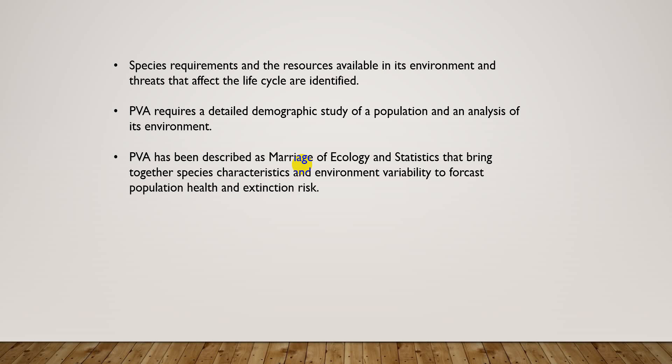At the first step, demography is important — population counting and ratio of male to female. If there is a large number of males in a forest and only one female, then there is a high chance of extinction. PVA has been described as a marriage of ecology and statistics that brings together species characteristics and environmental variability to forecast population health and extinction risks.